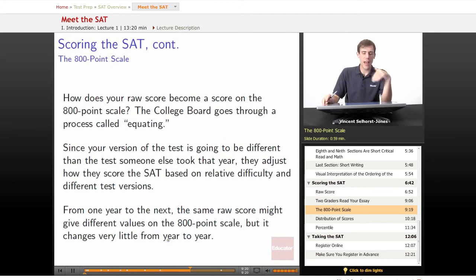The 800-point scale. How do we get from this raw score to the 800-point scale that we know so well and think of, I want the 2400? The College Board goes through this process called equating. Now, your version of the test is going to be different than the test someone took last year, and the year before that, and the year before that, and also the test that someone will take next year. So what they do is they're going to adjust the score of your SAT based on its relative difficulty compared to other ones, and also different test versions. So they're going to make it so that your test specifically sort of connects to the broader tests that everyone has taken.